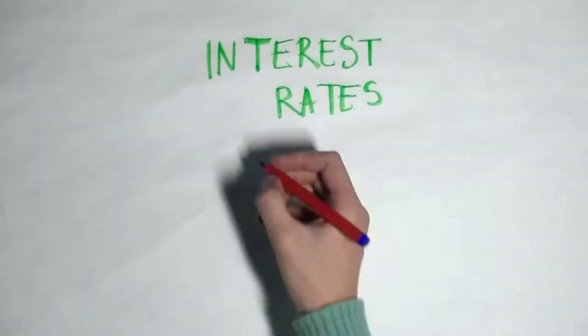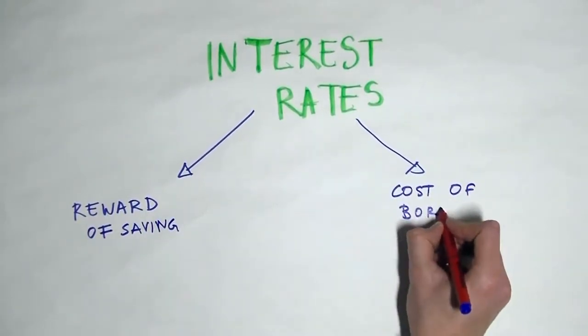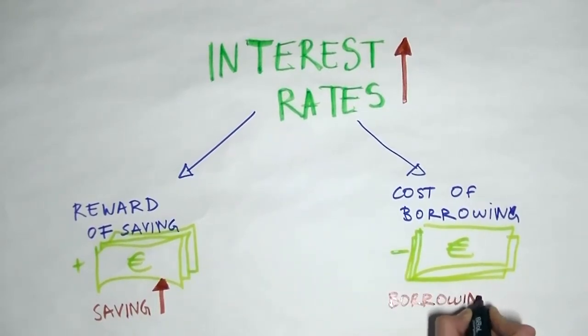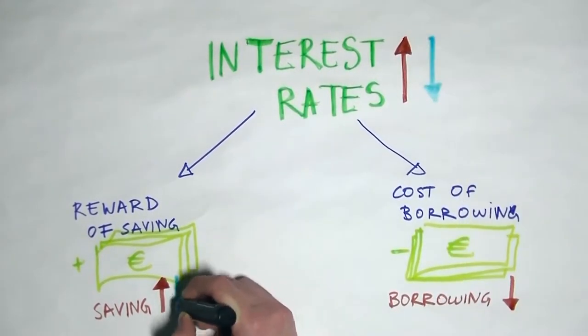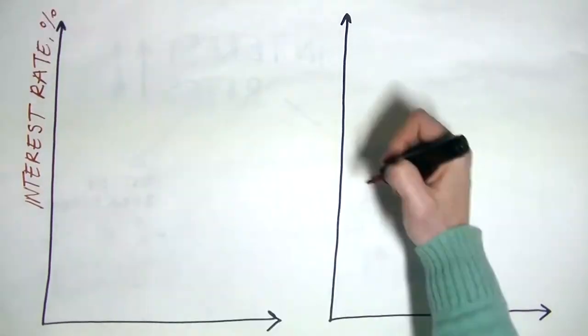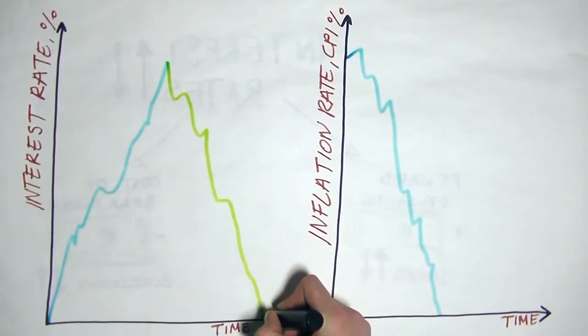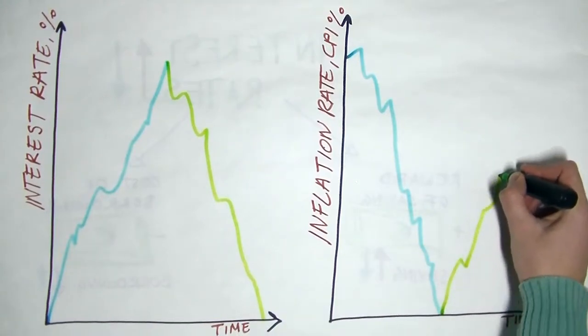Interest rates and the money supply. Interest rates are the cost of borrowing or the reward of saving. This means if the rate of interest increases, the reward of saving money is greater. So people are going to save more and spend less. Less money is available for buying the same amount of goods, so the price level decreases. Alternatively, if the interest rate decreases, demand increases and so does the inflation rate.